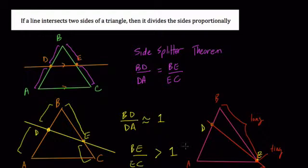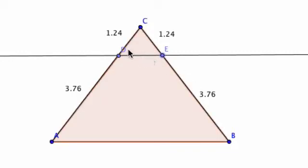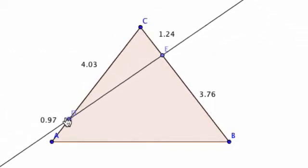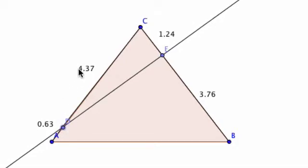Now, BD is greater than DA, but it's not nearly as many times larger than BE over EC. And you can see this, right? If I set this up here, you can see the measurements are proportional because here DE is parallel. But as I tilt this, you can see what happens. Here we have 4.37 over 0.63. Over here, we have 1.24 over 3.76.